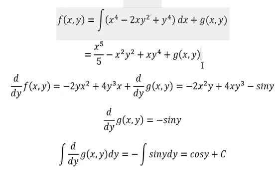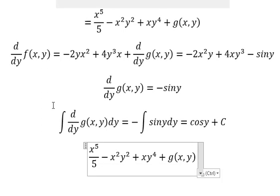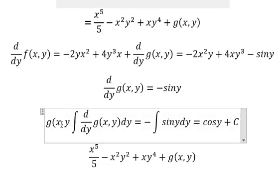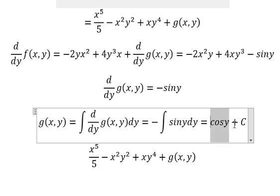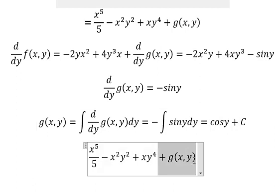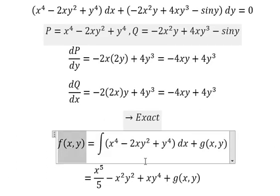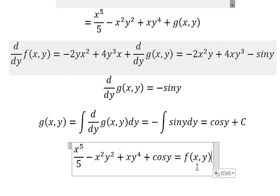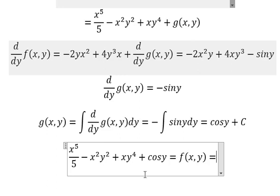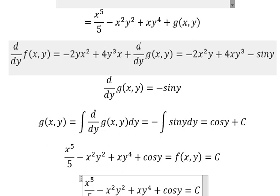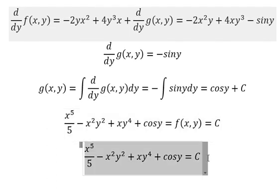Now we return back to this one. The integration of this one, we have g(x,y). g(x,y) equals cos y. We know that this one equals f(x,y), and this one equals C. Now we can simplify like this. This is the final answer.